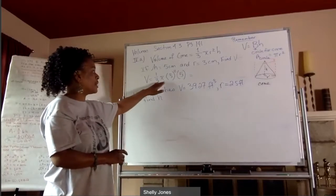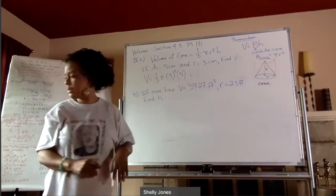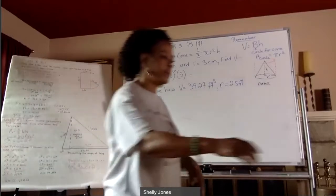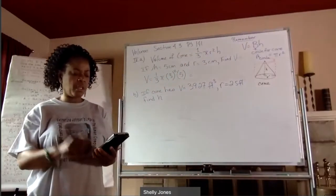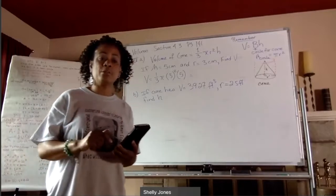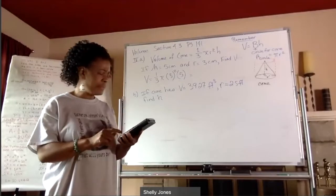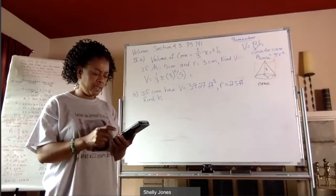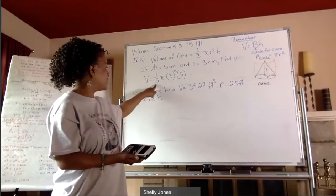So the volume is one third times pi times three squared times five. And here's my calculator. So I'm going to actually do that with my calculator. And I would suggest you do the same, especially because we want to be most accurate by using the pi button.